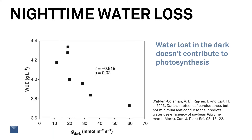Plants grown outdoors typically have high stomatal conductances during daylight hours, but they close their stomates tightly at night — most of the time, but not always. I was once monitoring stomatal conductance and leaf water potential of a potato crop over a 24-hour cycle. When night came, the conductances didn't drop like I expected them to. I thought my parameter was broken, but I tried it on corn in an adjacent field, and the corn conductance was very near zero. Water lost in the dark doesn't help photosynthesis, so it reduces the transpiration efficiency of the crop. This graph is from some recent work by Walden Coleman and others, where they show a strong negative correlation between the dark conductance of several cultivars of soybean and their transpiration efficiency — they call it water use efficiency.